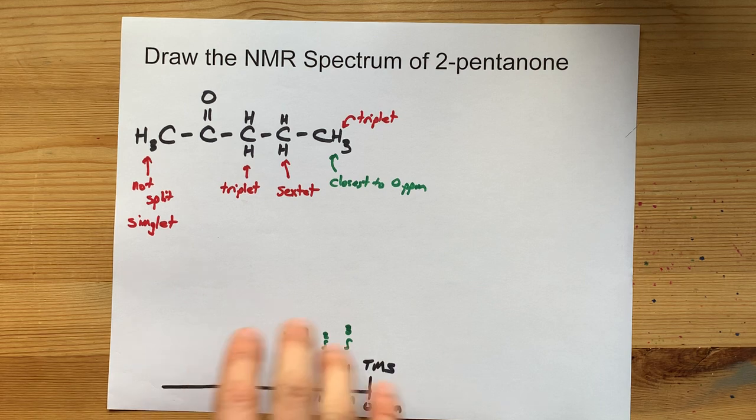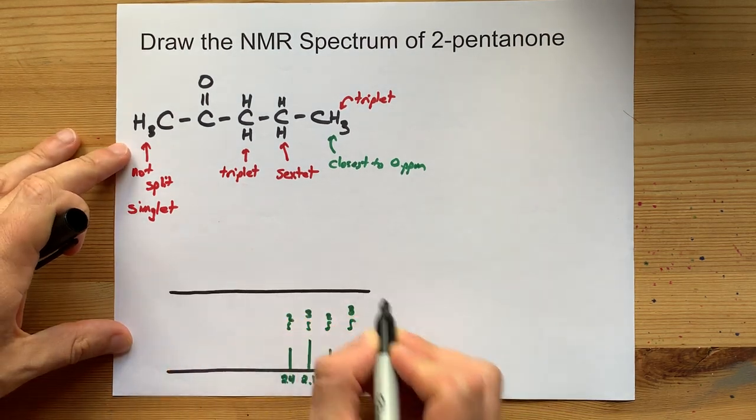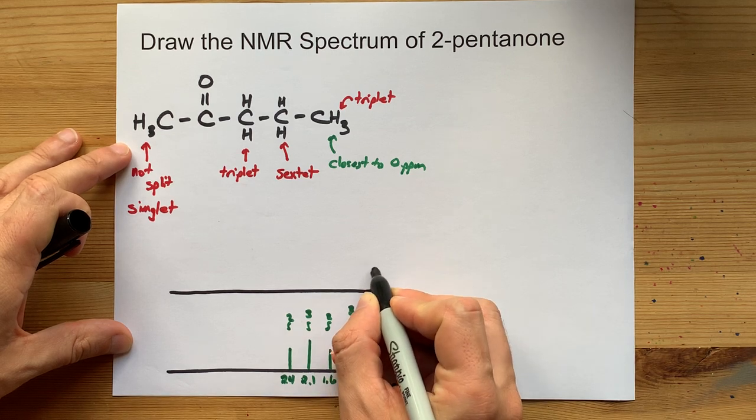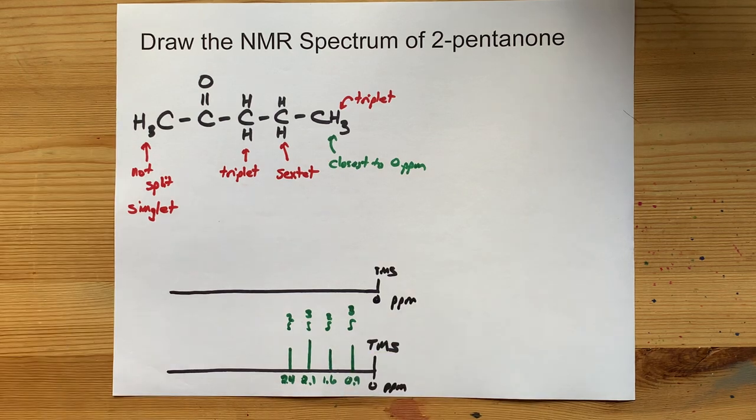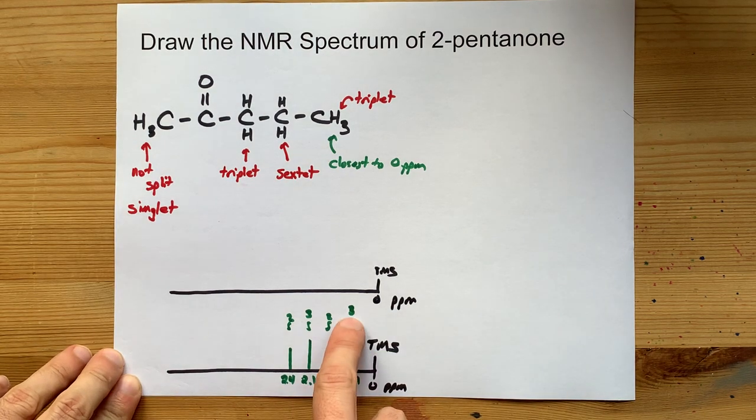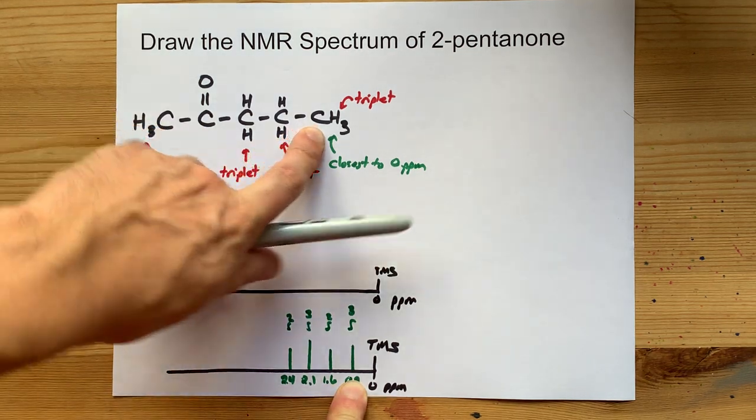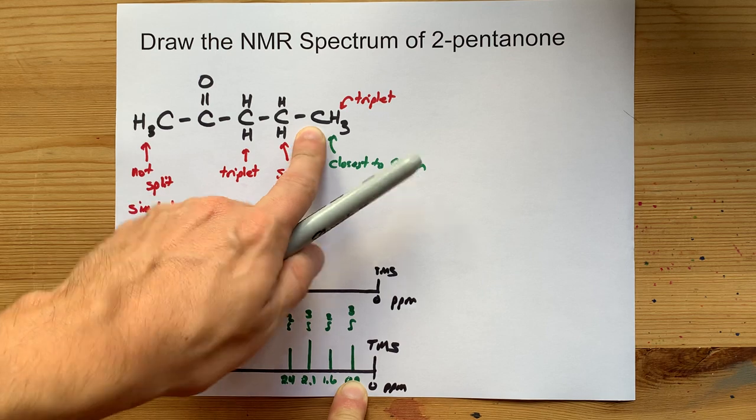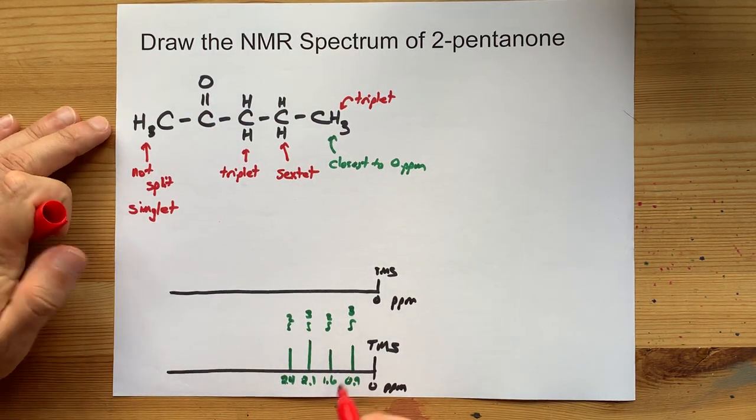Now, the high-resolution NMR spectrum is going to look similar except each of those gets split just a little more. I'll still give myself a TMS peak there. Now, these three hydrogens were these three hydrogens. And they were adjacent to two others, which makes it a triplet. So instead of giving yourself a single peak there,